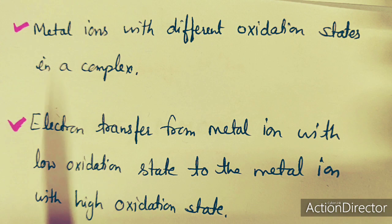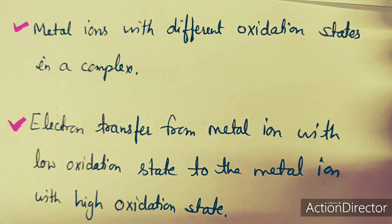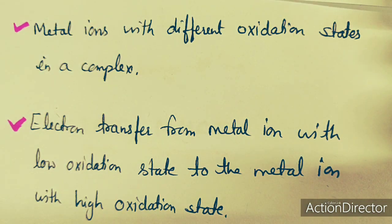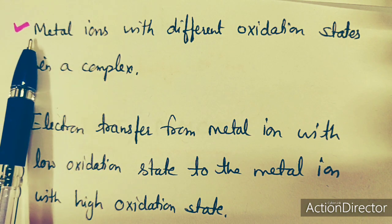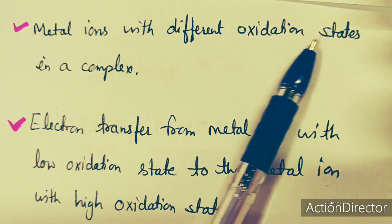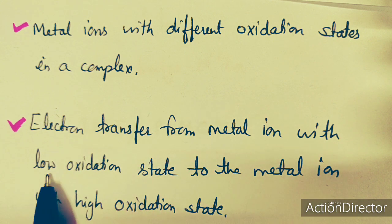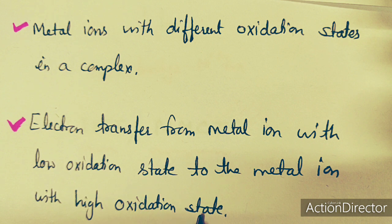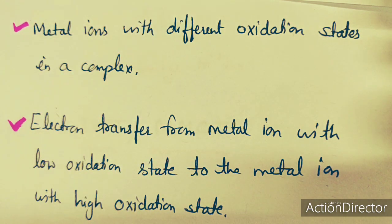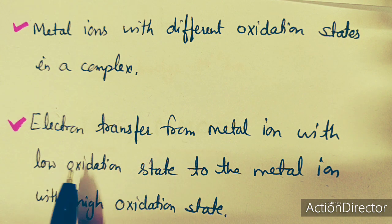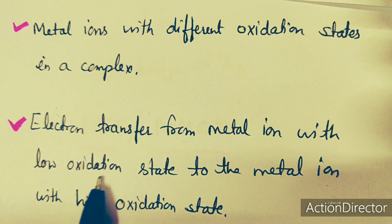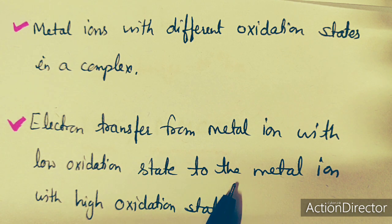Each case has a certain condition: which complex will show MMCT type transition, which will show LMCT type transition — that will depend upon the type of complex. In this case the complex should contain metal ions with different oxidation states. Then only the electron can transfer from one metal to another metal. The electronic transfer goes from the metal ion with low oxidation state to the metal ion with high oxidation state, because in the low oxidation state there will be more electrons.